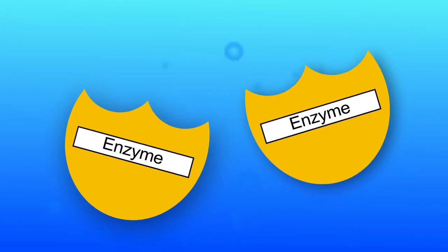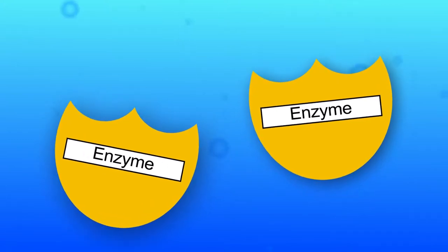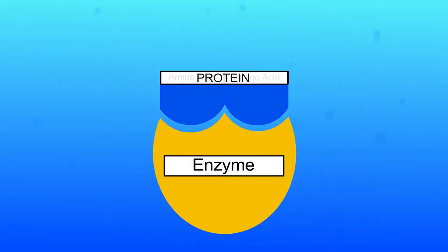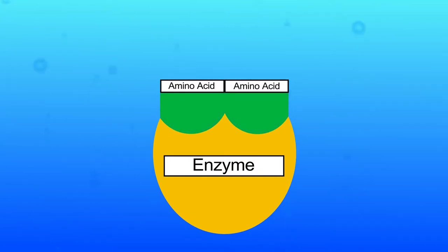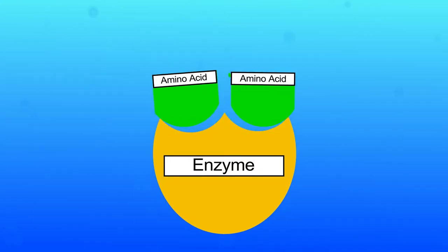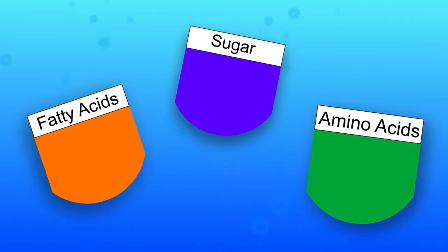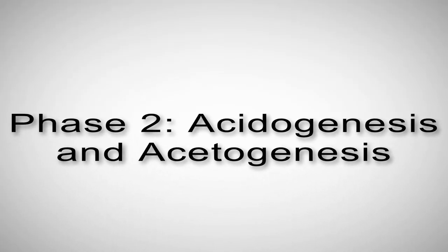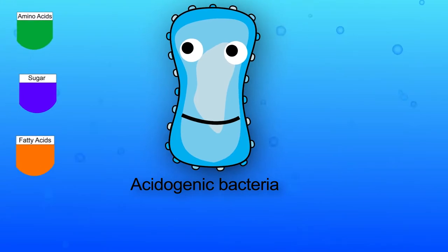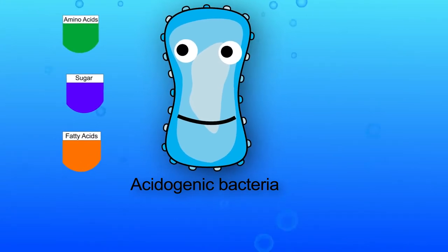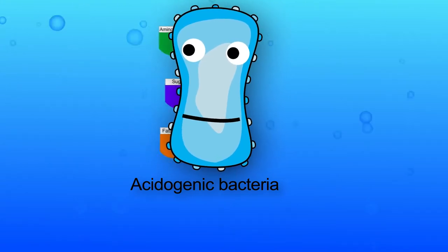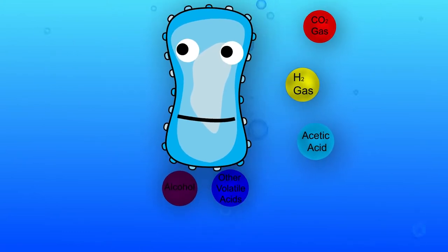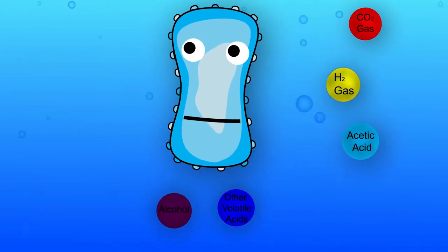In the first phase, enzymes excreted from bacteria break down fats, proteins and carbohydrates in the wastewater into simpler water soluble organics such as sugars, amino acids and fatty acids. In the second stage, acid forming bacteria convert these simple soluble organics into carbon dioxide, hydrogen and volatile acids including acetic acid and alcohol.